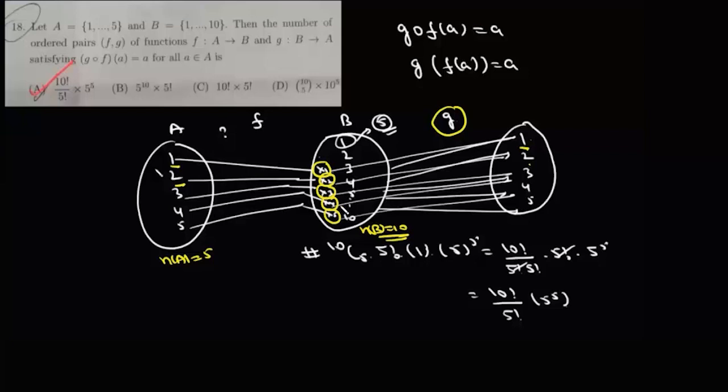The number of ways in which we can choose these five elements is 10C5. So now we have five elements in A and five elements in B. These five elements can be mapped to these five elements in 5! ways, so the total number of functions f will be given by 10C5 times 5!.